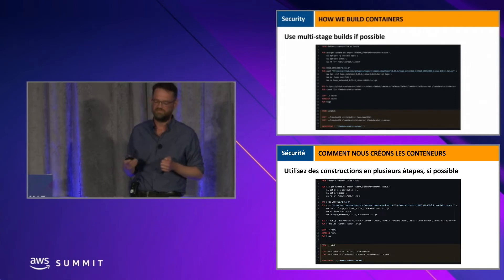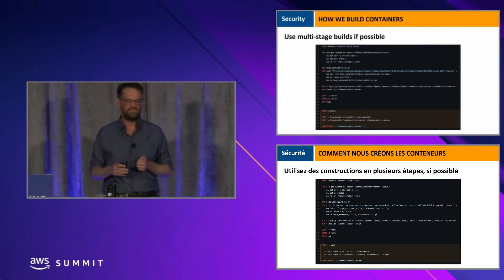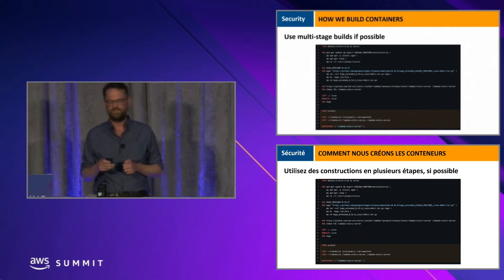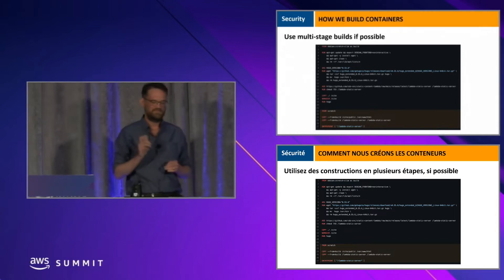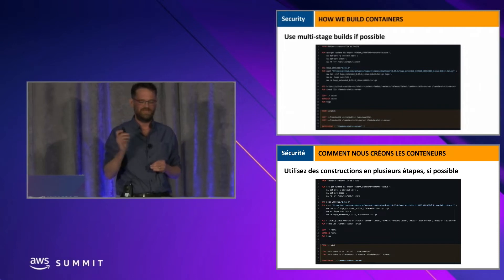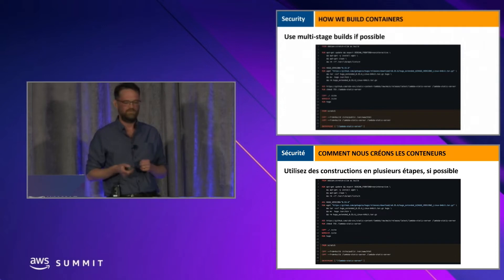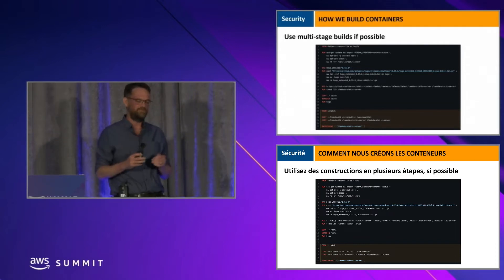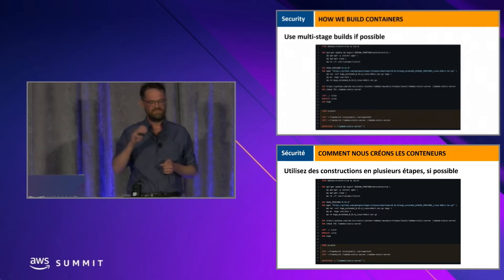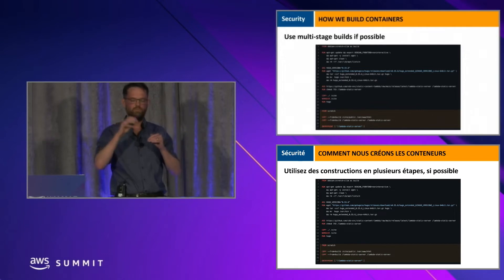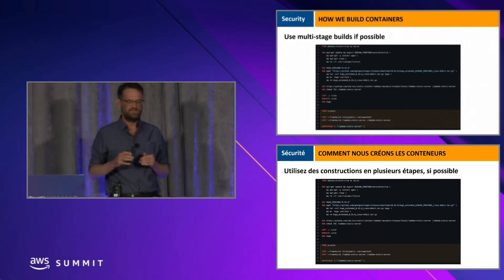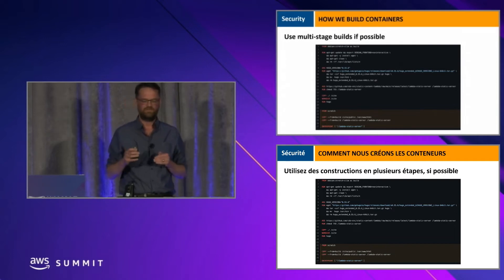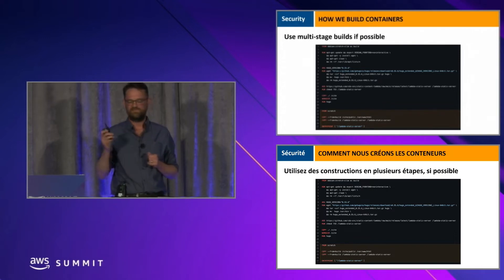The second recommendation is to use multi-stage builds if possible. A Docker build file defines how the container should be built — think of a container as a layer cake where different layers are built on top of each other. For the CDS website, because Go can compile static binaries that include all dependencies, all we need is the web server executable and the website source files. In the first build step we build the Go binary, then copy it into the next step, which is just an empty scratch container. There's no other system files, nothing that can be attacked — this significantly reduces the attack surface.